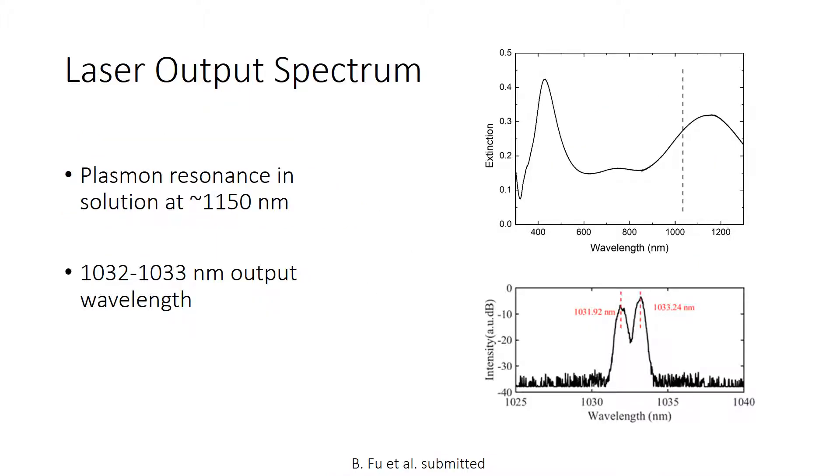We now discuss the properties of the output laser pulses starting from the spectrum. First, we notice that the starting solution has a broad plasmon resonance around 1150 nanometers. The pulse spectrum has a double feature at 1032 and 1033 nanometers.